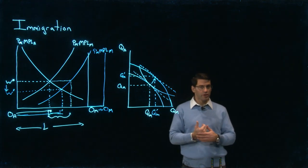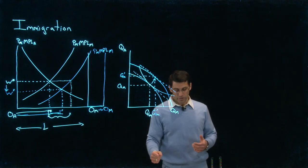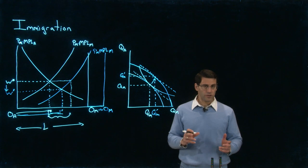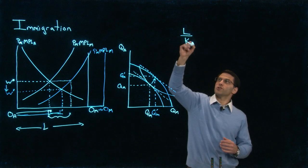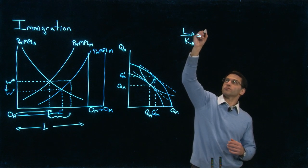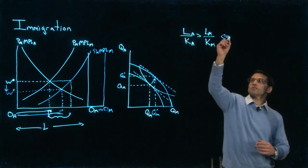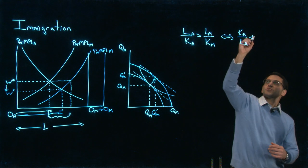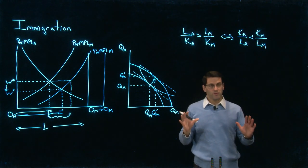That's our short-run analysis. In the long run, we're going to use the Heckscher-Ohlin model, which has only two factors: labor and capital. For our long-run analysis, we're going to assume that the manufacturing sector is our capital-intensive sector. That means the labor-to-capital ratio is higher in agriculture — equivalently, the capital-to-labor ratio is higher in manufacturing. We're going to assume that manufacturing is capital-intensive.